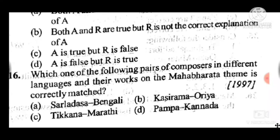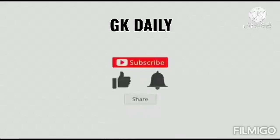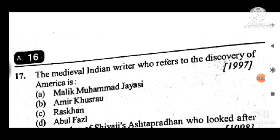Question 16: Which one of the following pairs of composers in different languages and their work on the Mahabharata theme is correctly matched? Answer is D, Pampa — Kannada. Question 17: The medieval Indian writer who refers to the discovery of America is — answer is D, Abul Fazl.